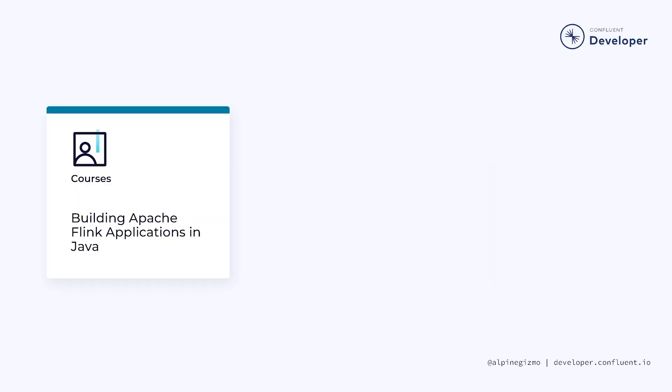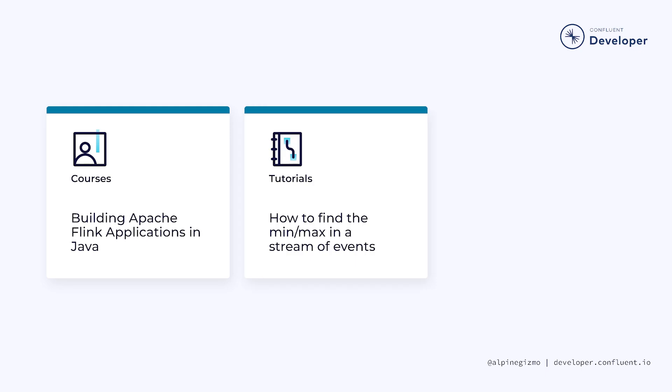At Confluent, we're always creating more Flink-related content, so stop by the Confluent Developer website to learn more. In particular, an excellent way to continue learning more about Apache Flink is to check out this course on building Apache Flink applications in Java, which you'll find alongside this Apache Flink 101 course on Confluent Developer. We also have some great tutorials showing how to handle specific use cases with Flink, such as this one on finding the min and max in an event stream.